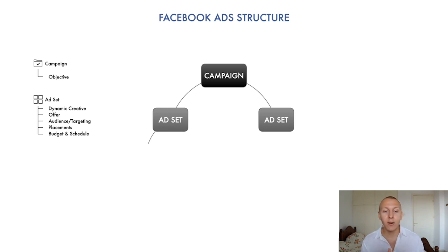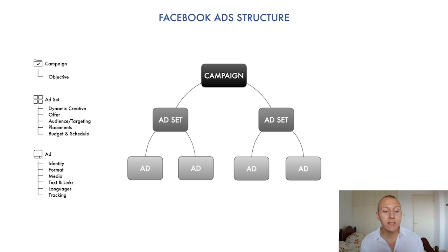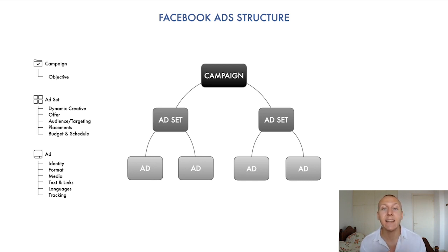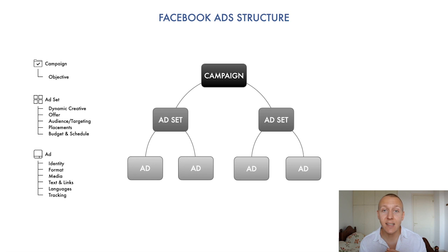Inside the ad set is the third level: ads, also known as ad designs or ad creatives. This is the actual look of your ads. Here we decide the format — is it going to be a video, a single image, multiple images, a slideshow, or a carousel? We also decide what picture or video to use, what headlines and text to use. All of these things are decided at the ad level. A single ad set with its unique budget and audience could have a hundred different ads, all working from that same budget targeting that specific audience.